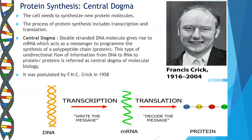During this process, synthesis of a complementary strand of RNA takes place. We have a concept called the central dogma for protein synthesis. A double-stranded DNA molecule gives rise to mRNA, which acts as a messenger to program the synthesis of a polypeptide chain, i.e. proteins. This type of unidirectional flow of information from DNA to RNA to proteins is referred to as the central dogma of molecular biology.